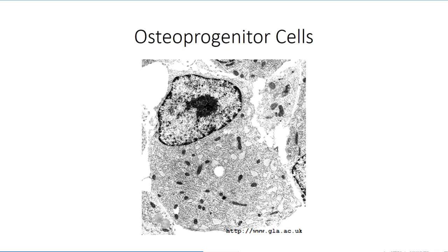Osteoprogenitor cells develop from the mesenchymal stem cells found in both the periosteal and endosteal layers and can be thought of as a further specialized type of stem cell, similar to a student continuing in graduate studies. These cells are highly proliferative, ensuring that there is a constant supply of cells available to differentiate into bone-forming cells. Osteoprogenitor cells are small and round, with the majority of volume taken up by the nucleus. As they are not actively producing matrix, the endoplasmic reticulum and Golgi apparatus are not extensively developed.